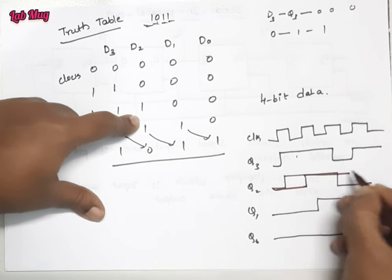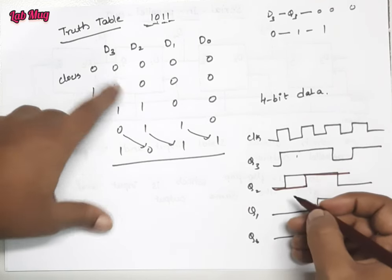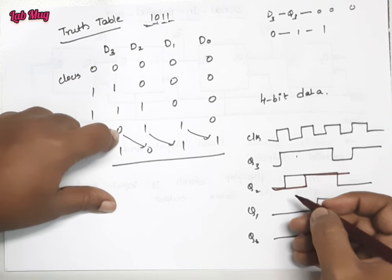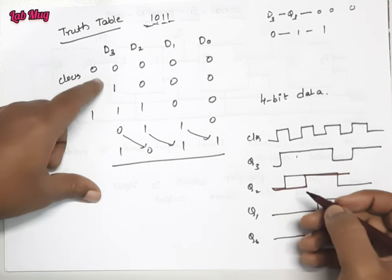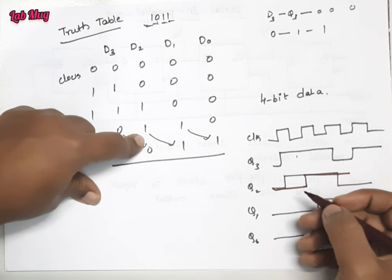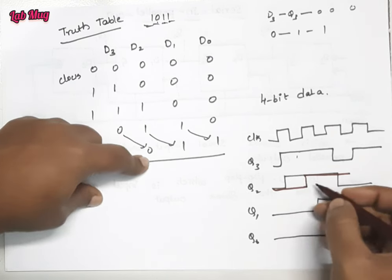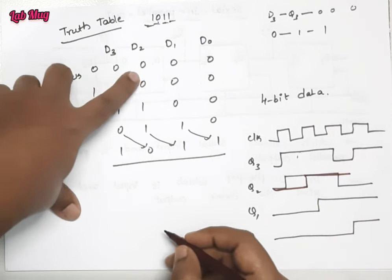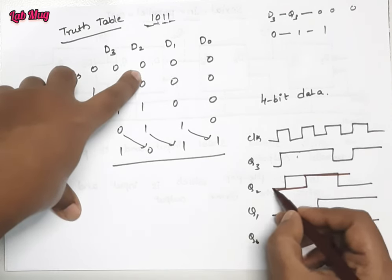Zero zero one one. So we have zero one one zero. That is one one zero one, one zero one one zero. Sorry, we considered the zero.